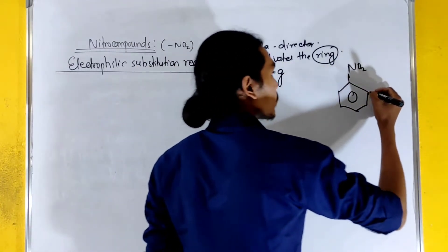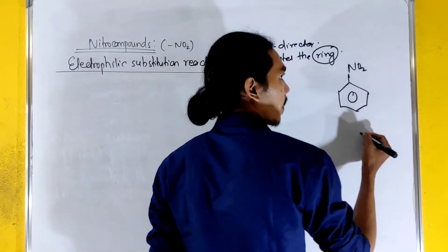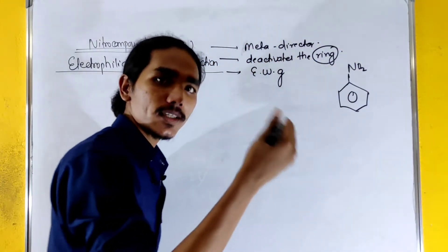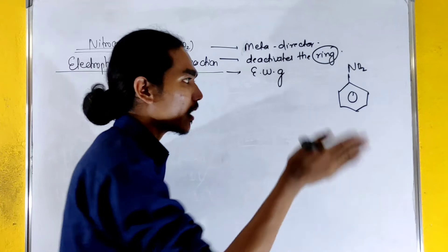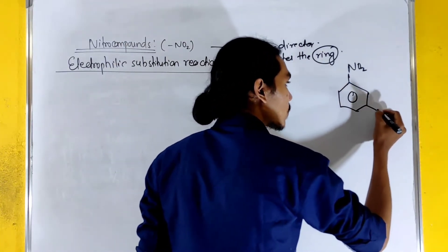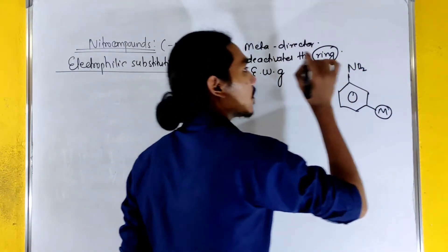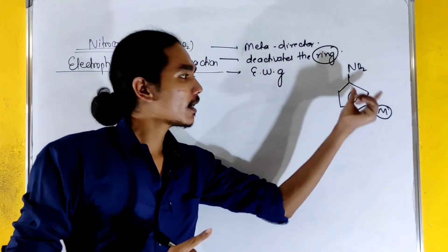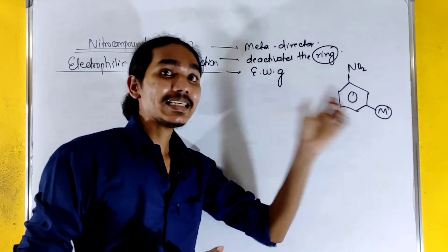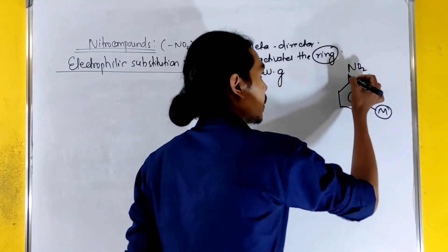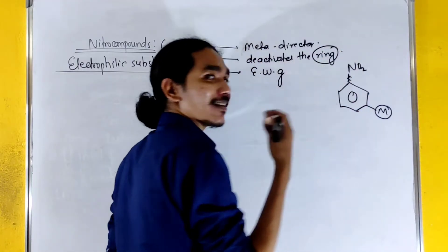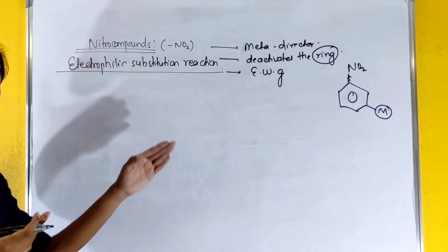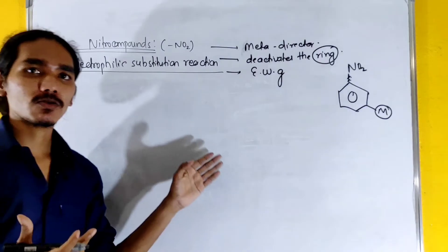The positions are called Ortho, Meta, and Para. Ortho or Para positions are directed by electron-releasing groups, while Meta positions are directed by electron-withdrawing groups. This can be explained on the basis of resonating structures.